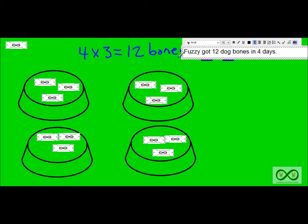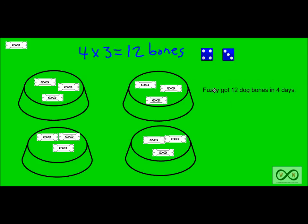There you go. There's our complete sentence. Let's move that down so you can see it a little better. So Fuzzy got twelve dog bones in four days. It must have been a good dog. So you could just repeat that. Let's just try it one more time.